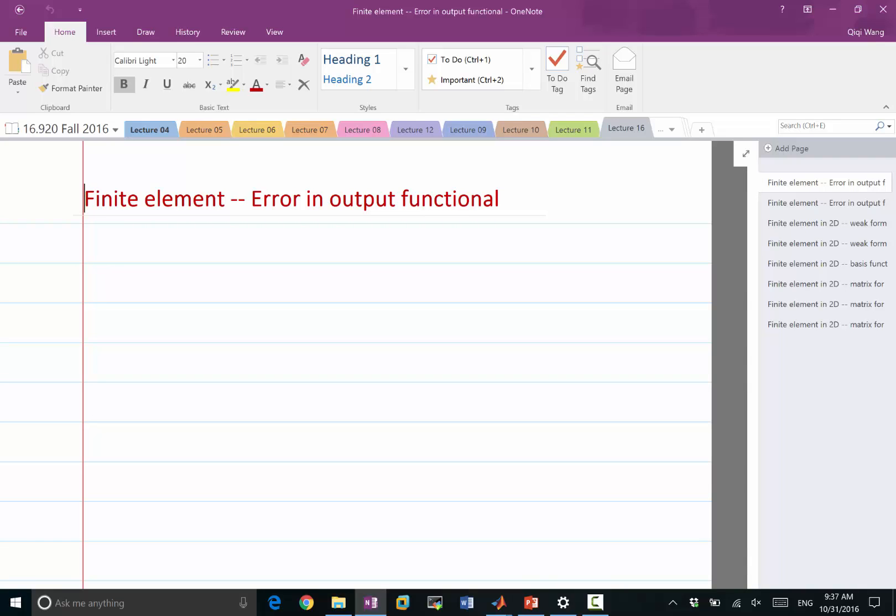The error estimates we have looked at are mostly a priori error estimates because the precise form of the error is going to depend on the particular solution, not the approximate solution.